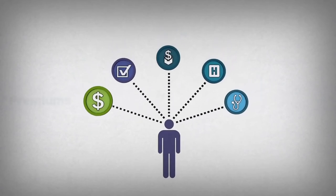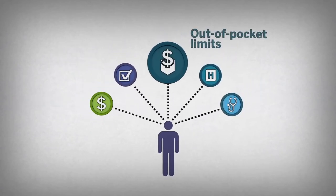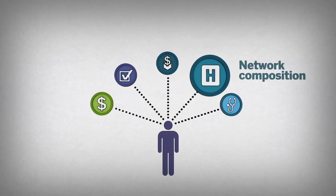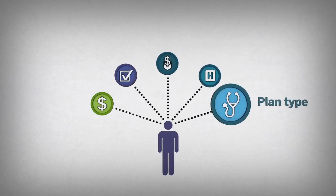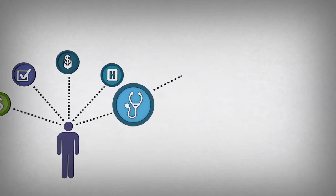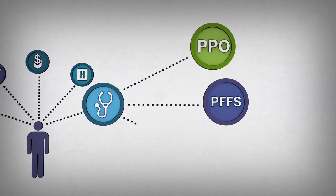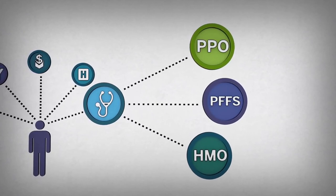In addition to monthly premiums, benefit options, and out-of-pocket limits, they must also consider network composition and plan type. If provider choice is important to them, they may opt for a plan that features either a PPO or private fee-for-service structure rather than a more restrictive HMO.